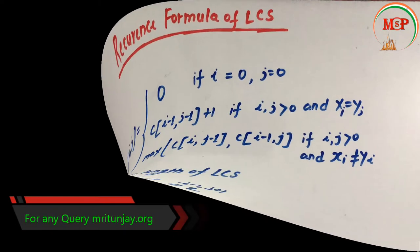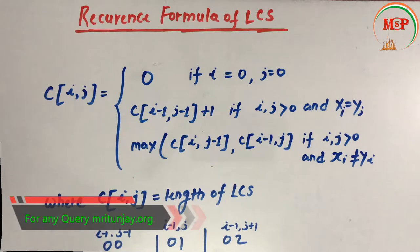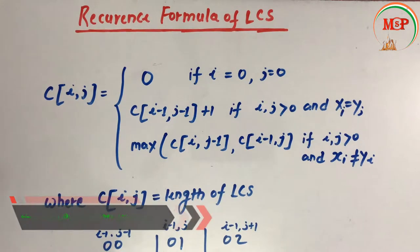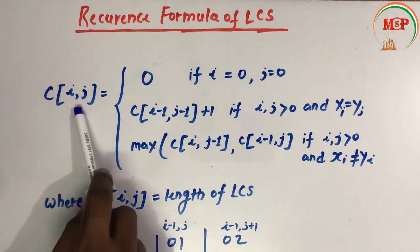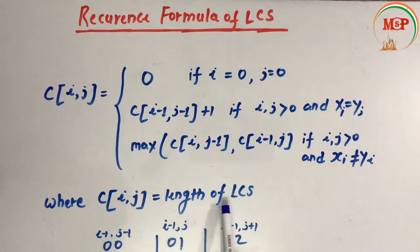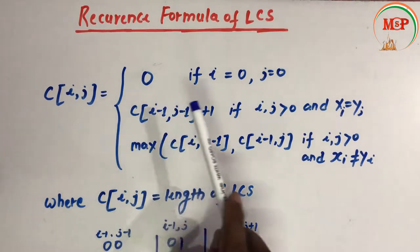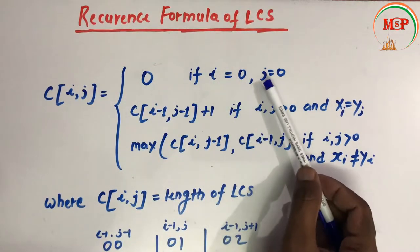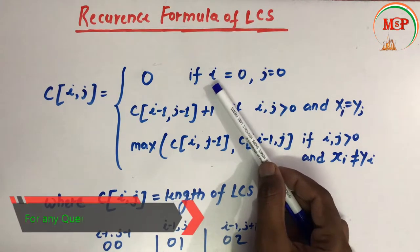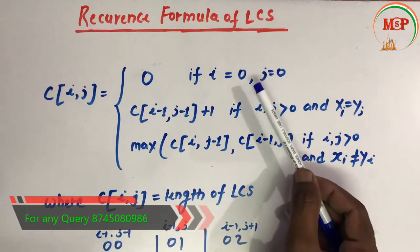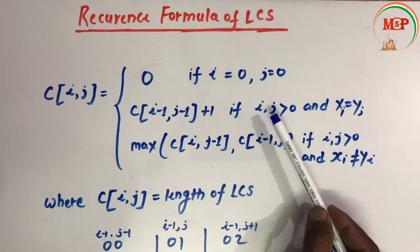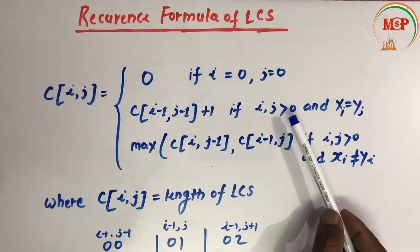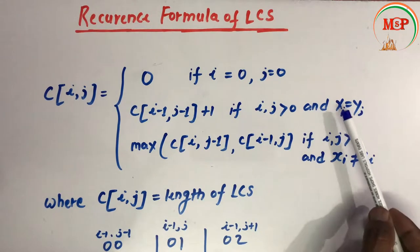In this video we are going to study the recurrence formula of LCS — that is, how the recurrence formula works when we solve the LCS problem. The formula c[i][j] represents the length of LCS from i to j. Here i is the row and j is the column. If both i and j are equal to 0, then we put all values as 0.